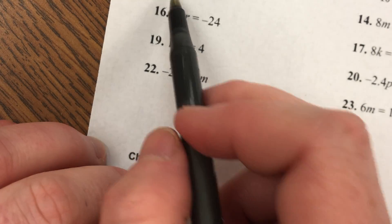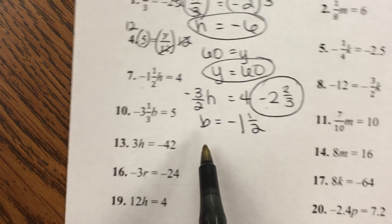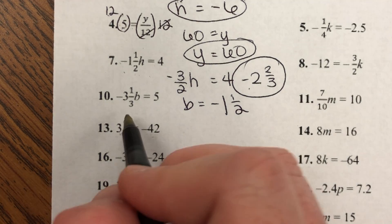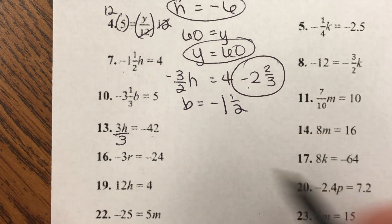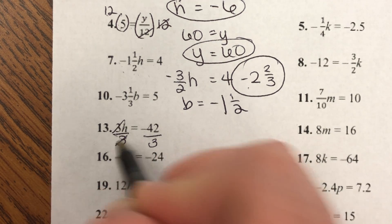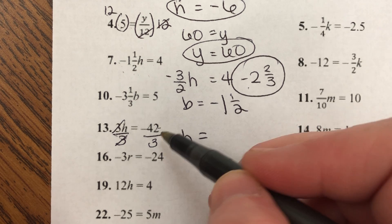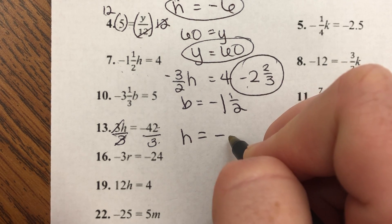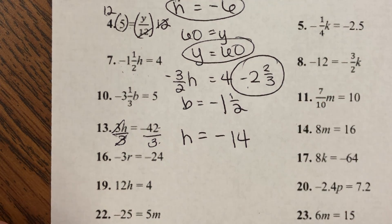Number 13: H times 3 equals negative 42. To get rid of times 3, I divide both sides by 3. These threes cancel. H equals negative 42 divided by 3, which is negative 14.